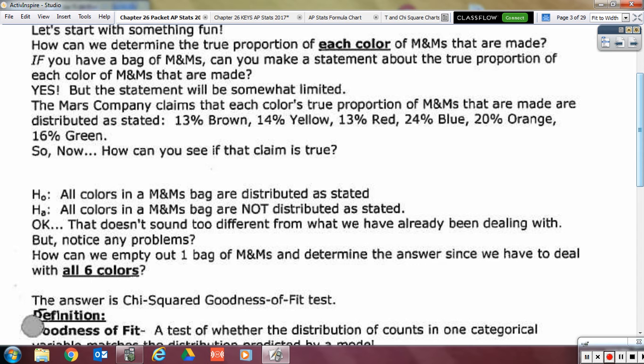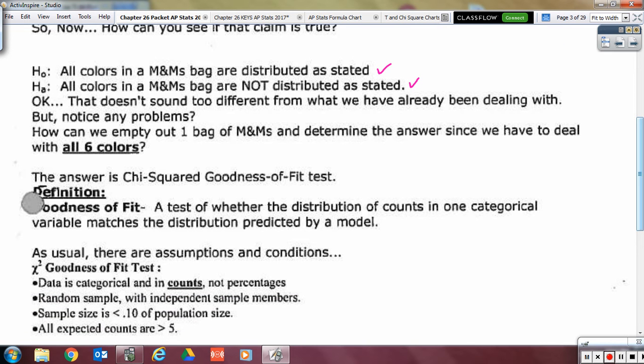So we want to see if their claim is true collectively for all of those colors. Look at how our null hypothesis is stated. It's not a Greek letter equals a number. It's actually out all in words that all the colors in the M&M's bag are distributed as stated. The alternative is that all the colors in the M&M's bag are not distributed as stated. So that seems pretty much like we've been doing. We say we got what they got unless we have evidence against it.